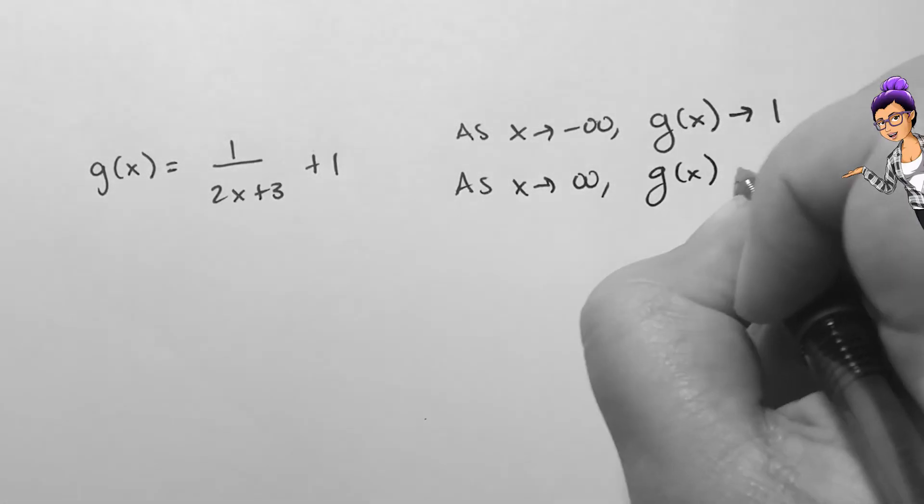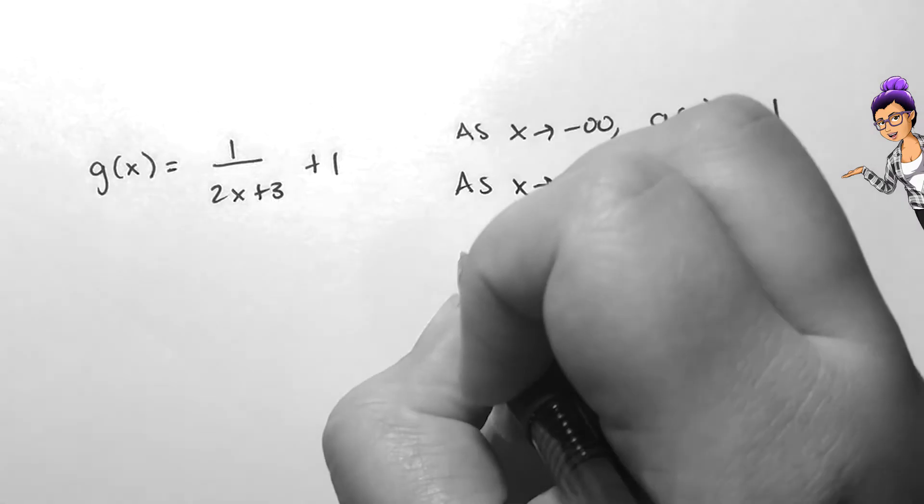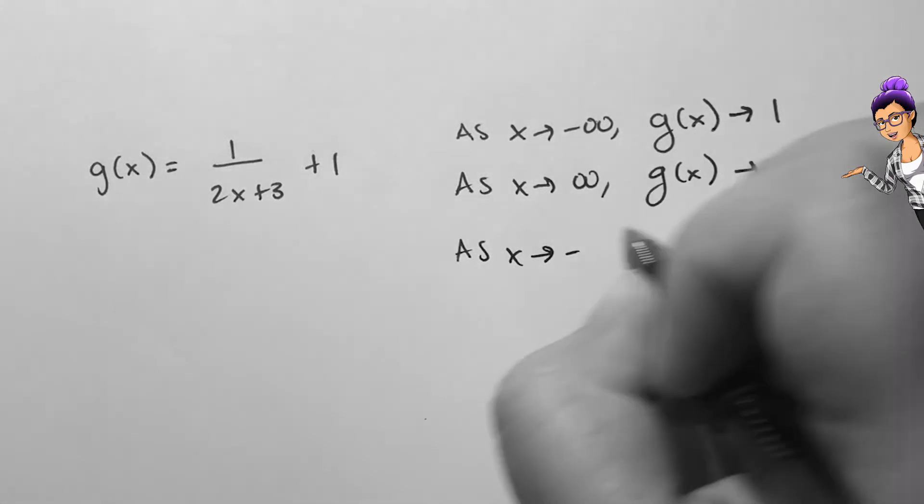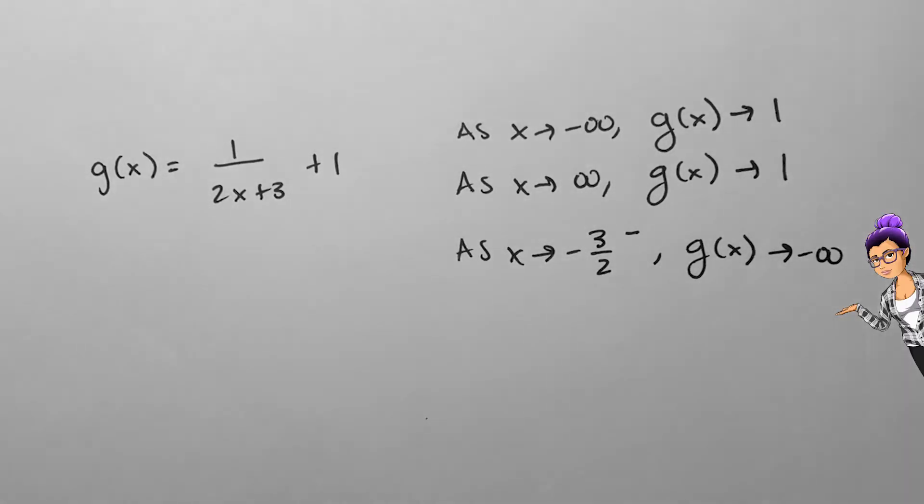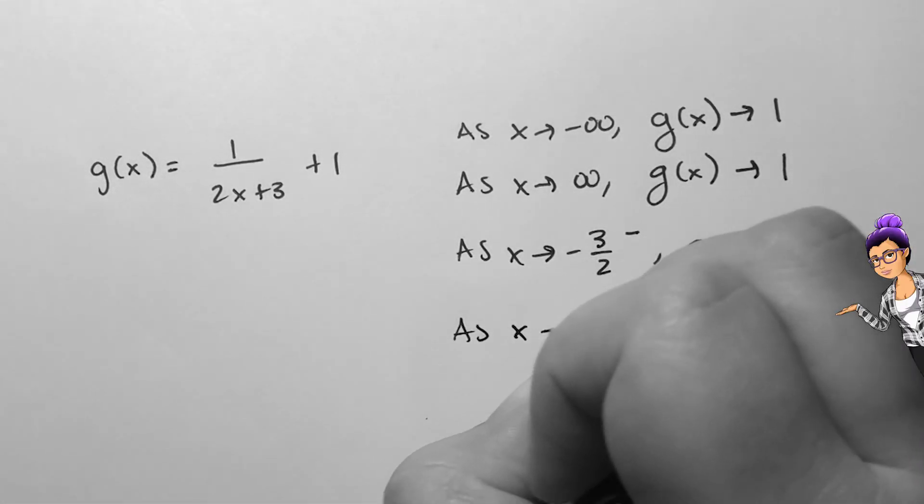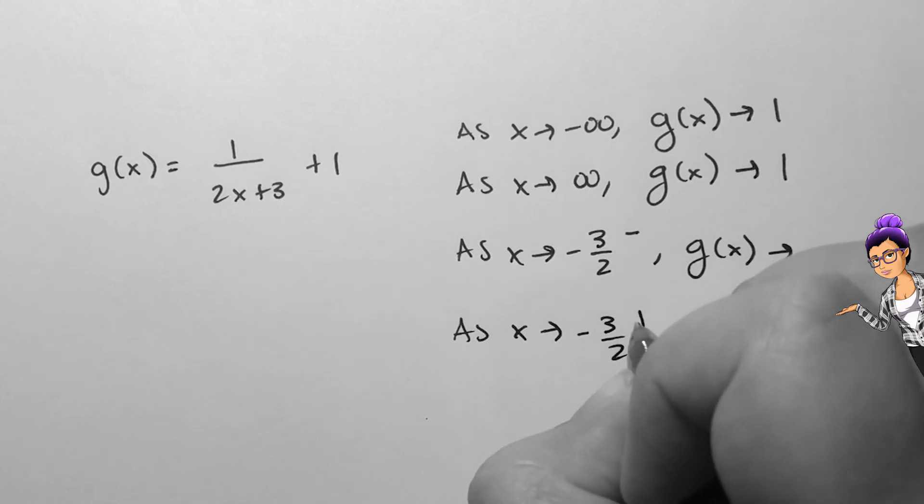If we take g of x equals 1 over 2x plus 3 plus 1, we'd say that as x approaches negative and positive infinity, g of x approaches 1. We'd also say that as x approaches negative 3 halves from the left, g of x approaches negative infinity.